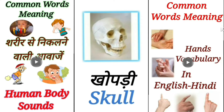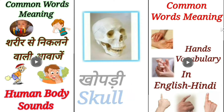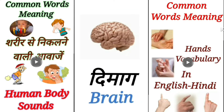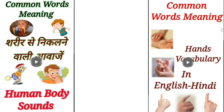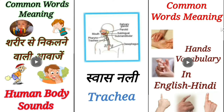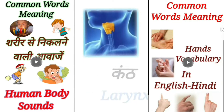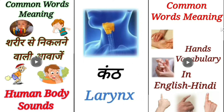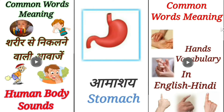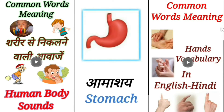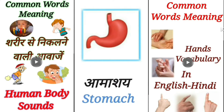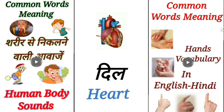Khopadi – Skull. Dimaag – Brain. Svastanalli – Trukya. Kunt – Larynx. Amashe – Stomach. Dil – Heart.